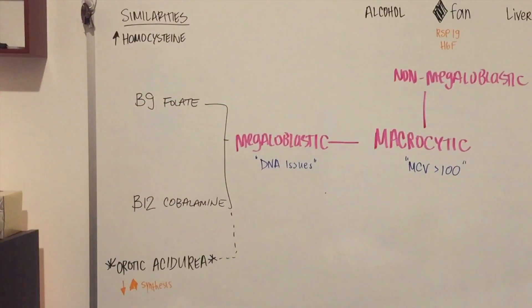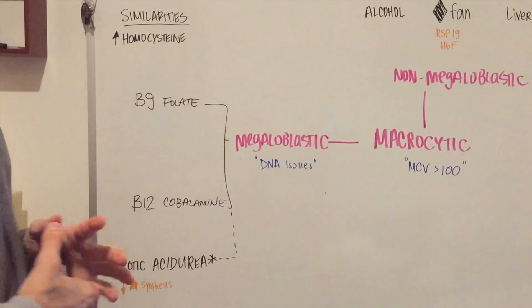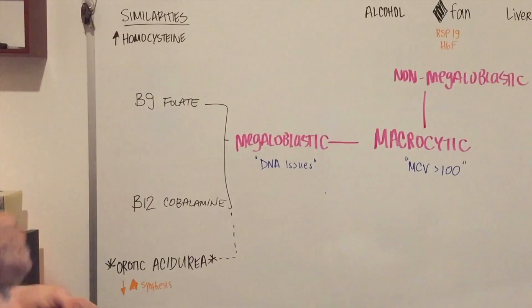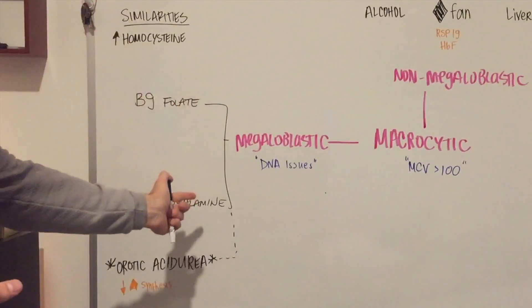So these are all going to be vitamin deficiencies. So it's very possible that on an exam or when you're talking to a patient, it can be presented as a very strict diet or lack of tea and toast diet or lack of just eating a lot of folate or B12.